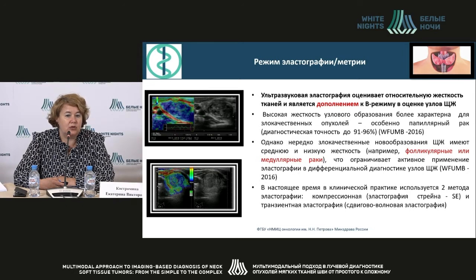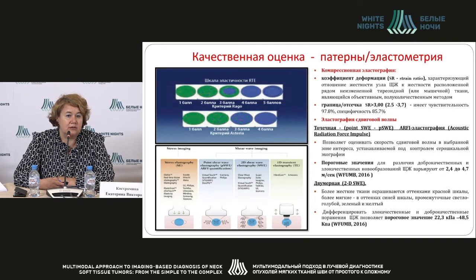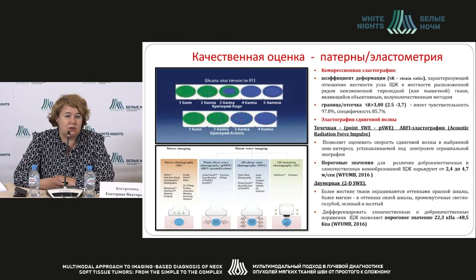Sometimes neoplasms have low and medium rigidity; hence elastography is not useful for such cancers. There are two methods of elastography: compression and shear wave. Compression involves dosed compression on the node by the operator with a color code assessment and the deformation ratio is determined. We can compare the rigidity of the target node to healthy nearby tissues, with quantitative assessment and a fairly precise borderline.